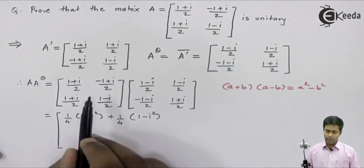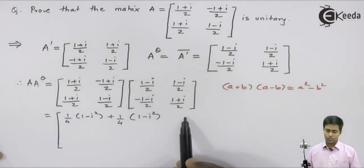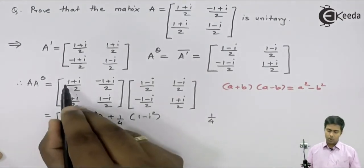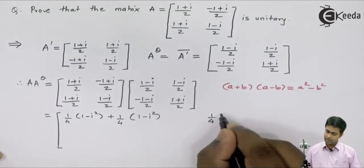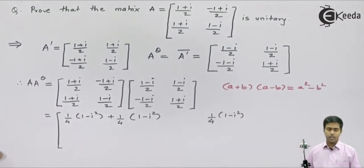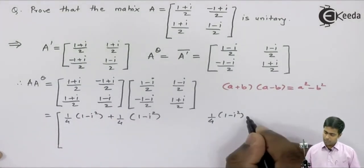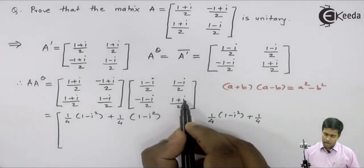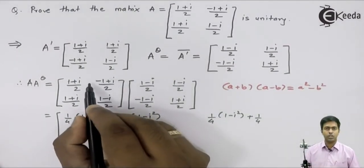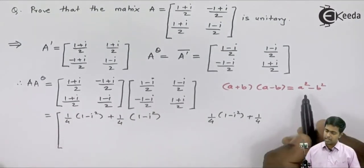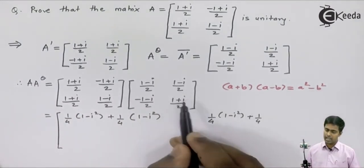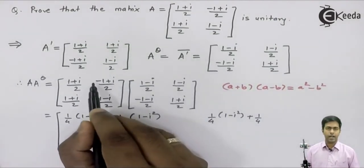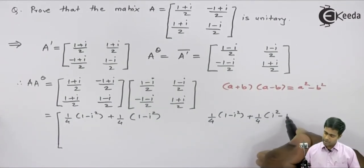Now multiplying the first row with the second column: 1/2 × 1/2 again gives 1/4, and (1+i)(1-i) by the same formula gives 1 minus i-squared. Next, 1/2 × 1/2 = 1/4. Here we have (i+1) and (i-1), so considering i as A and 1 as B, I can apply the same property: (i+1)(i-1) gives i-squared minus 1.